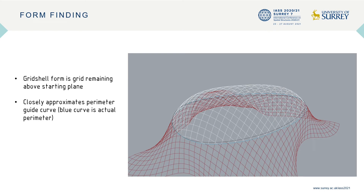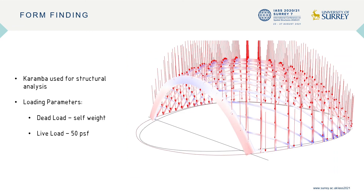Once the form-finding process was complete, a location for an opening was chosen and the model prepared for structural analysis. For structural analysis, we used CARAMBA after testing it against SAP2000. Our loading parameters were based on LRFD load combinations from ASCE-7. The structure support points were anywhere the grid met the ground, and all the nodes were fixed connections. Here you can also see the final form chosen for our cabin as well as the front opening used for a doorway and windows.